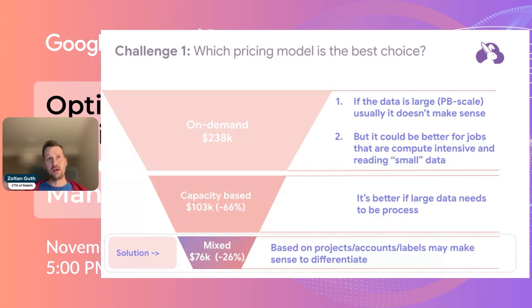They can use the on-demand one if it's not that big data behind that, because it's cheaper in that case.